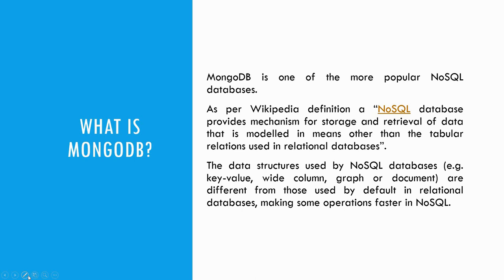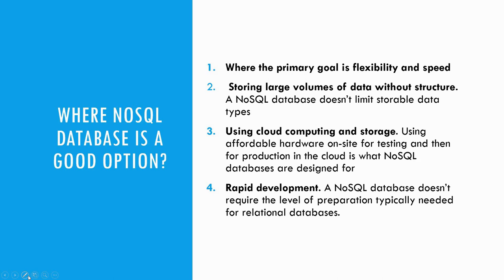The data structures used by NoSQL databases — which are non-relational and not SQL-based — include key-value, wide column, graph, or document. These are different from those used by relational databases, making some operations faster in NoSQL, and this is where a NoSQL database is a good option.